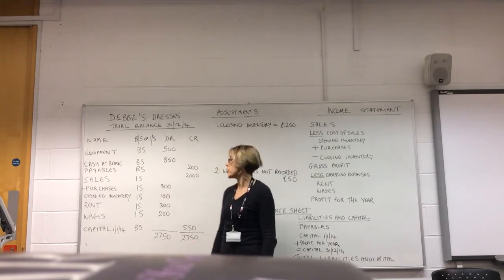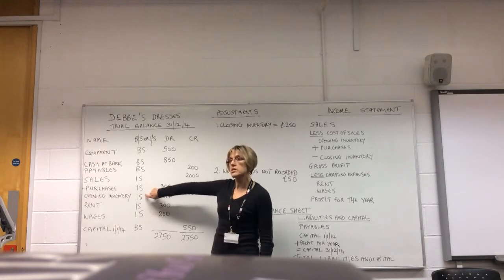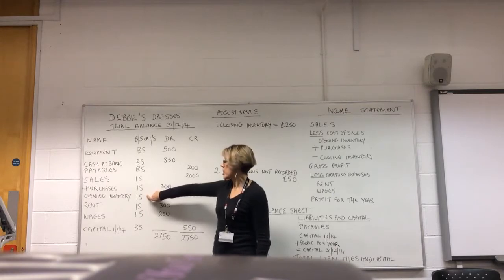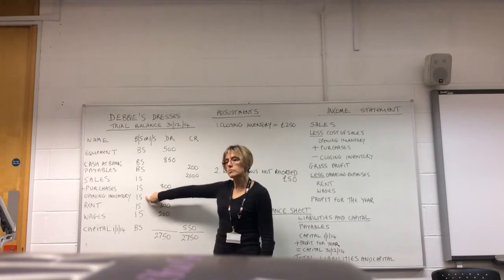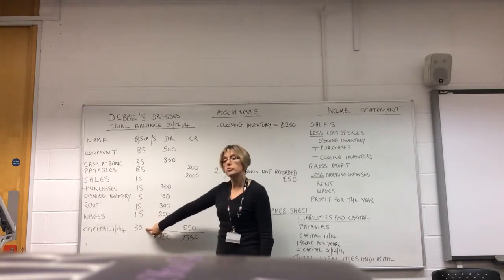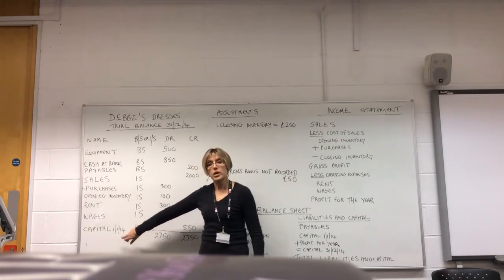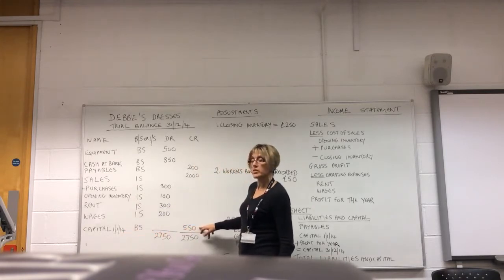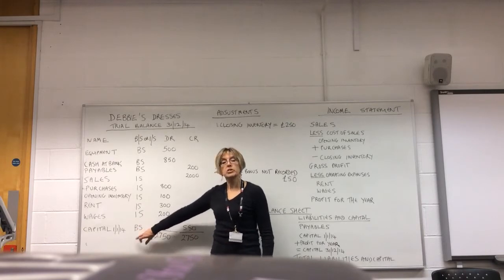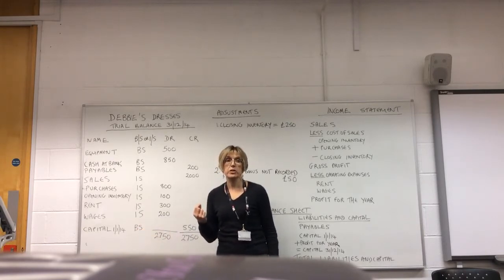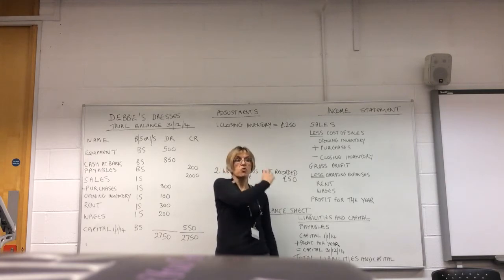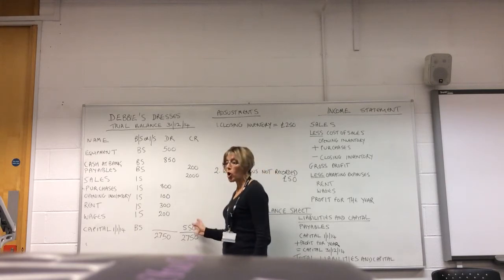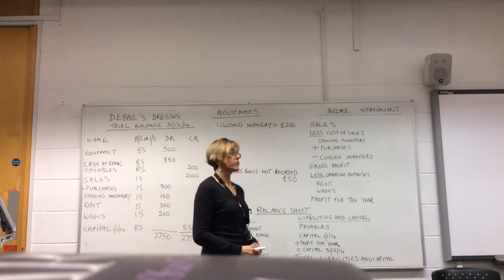Two things to remember about the trial balance. The first is that the trial balance has the opening inventory figure — that's the inventory at the start of the year, carried forward from last year. So we've got our opening inventory, and that is an income statement figure that's going to be part of our cost of sales. And the capital figure is also at the start of the year — £550 in this case — that's going to go into our balance sheet. We don't know what our capital figure at the end of the year is going to be because we have to work out our profit. Remember, the profit is going to be part of the capital figure at the end of the year.